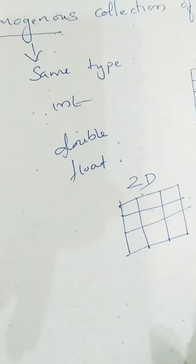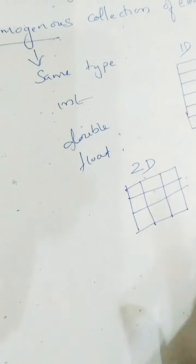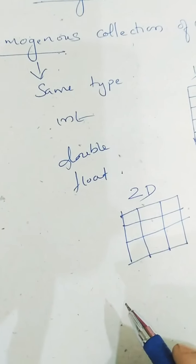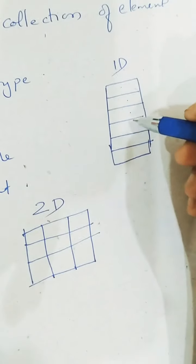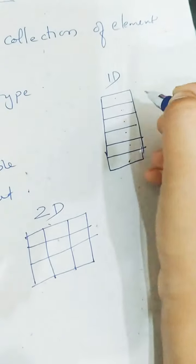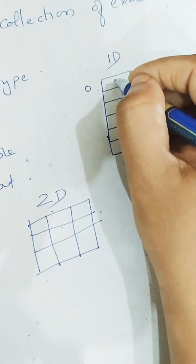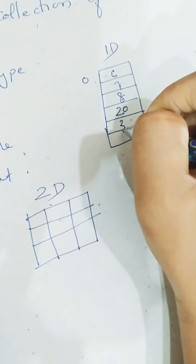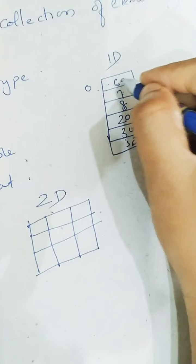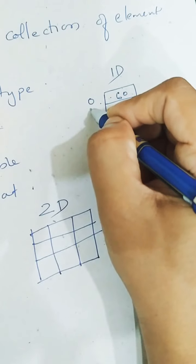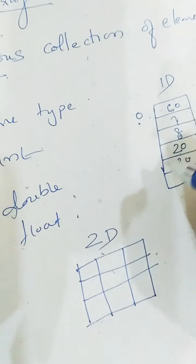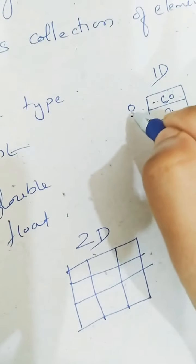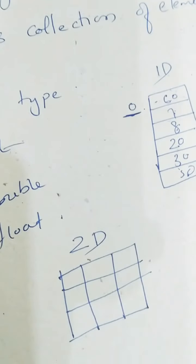So this is what an array is — it is a collection of elements of the same type. Now we will discuss about array index. Index means each element in the array is identified by its index. Suppose the elements are 6, 7, 8, 20, 30, 15 — each element is identified by its index, similar to the index page in your notebook. Array index usually starts with 0, so the positions are 0th, 1st, 2nd, 3rd, 4th, and 5th.